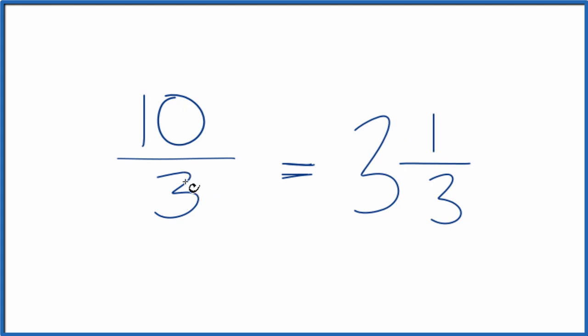10 thirds, the improper fraction, equals a mixed number 3 and 1 third. But in answer to our original question, the fraction 10 thirds is in lowest terms already. We can't simplify this any further. This is Dr. B, and thanks for watching.